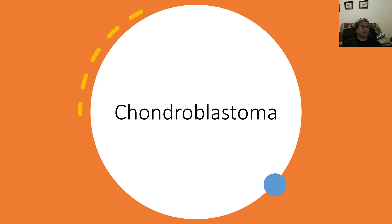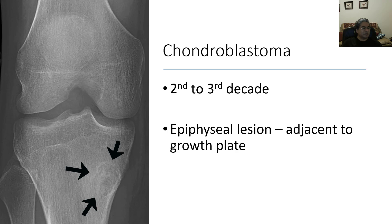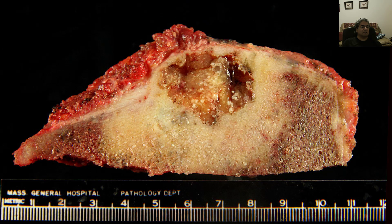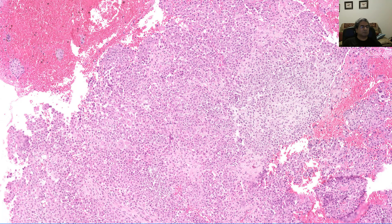Here's a five-minute spiel on chondroblastoma of the bone. It's right there in the epiphysis. There's the lesion on MRI — notice it's very well circumscribed and surrounded by intense edema. All this white stuff is edema. Here's a gross image. It's again in the epiphysis and very well circumscribed.